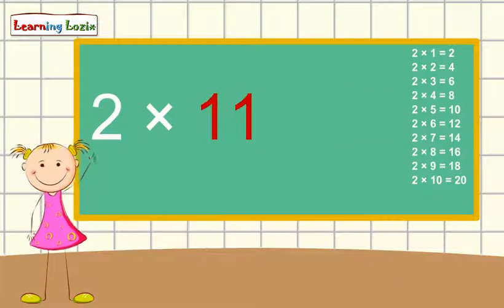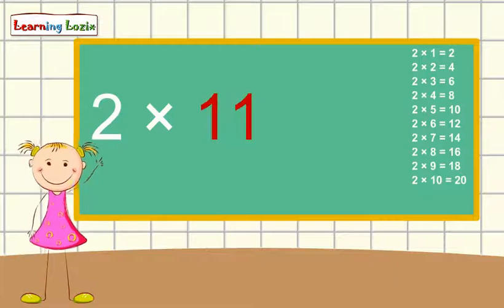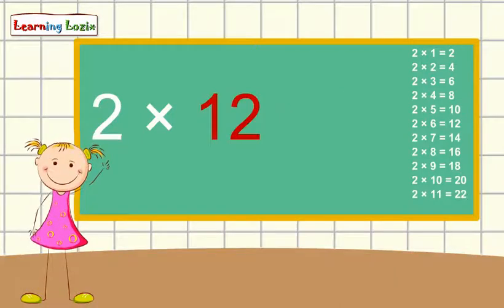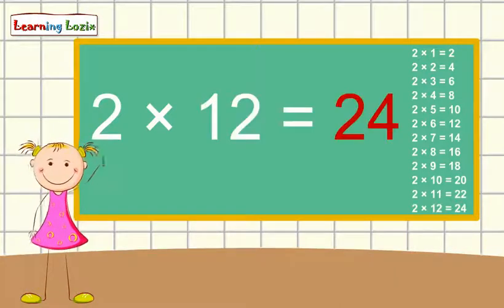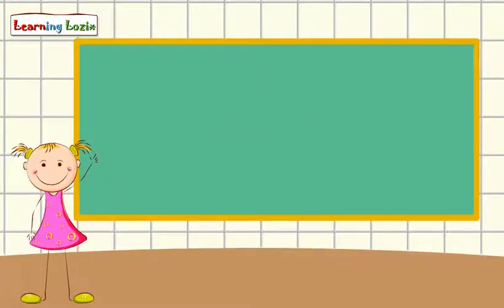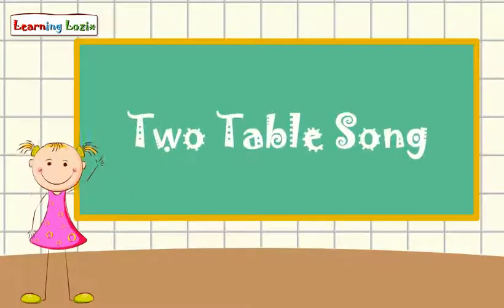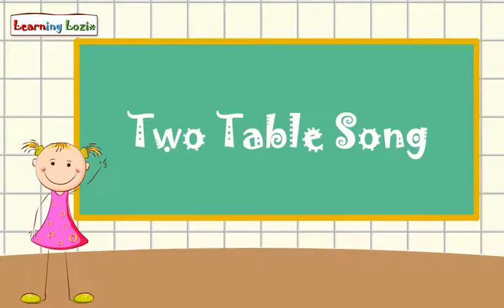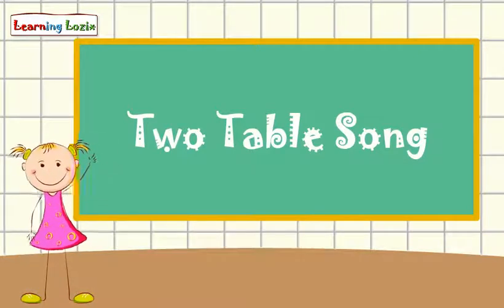Two times eleven is twenty-two, two times twelve is twenty-four. This is the two-table song, learn and sing along — multiplication table of two.